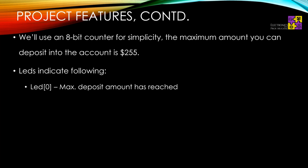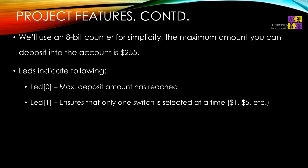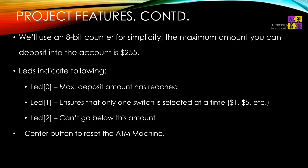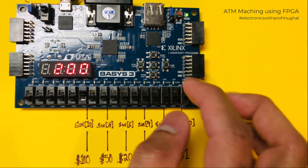There are three LEDs in this project used as output indicators. LED zero indicates the maximum deposit amount has been reached. LED one ensures that only one switch is selected at a time — you cannot have two different dollar amounts switched to high position simultaneously. The third LED indicates that you don't have enough balance in your account. The center button resets the machine, resets the counter, and you start from scratch.